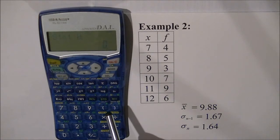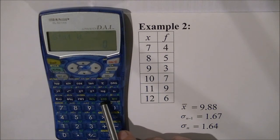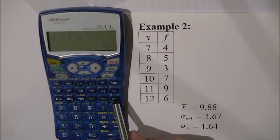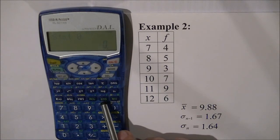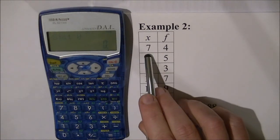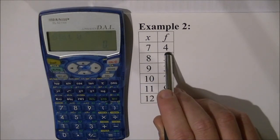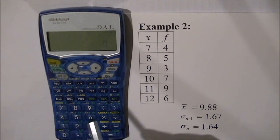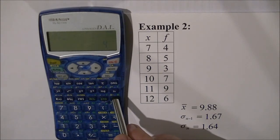Now to do this we're going to need to use our numbers to enter the scores but this time we'll be using the STO key as well as the M plus button and what the STO key allows you to do is enter lots of scores in one go. So we're going to enter seven four times so we press seven STO four M plus.